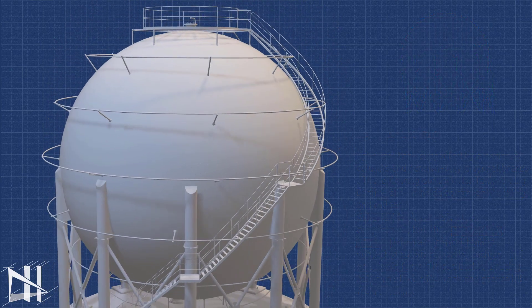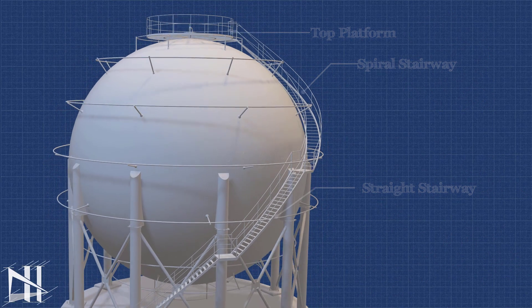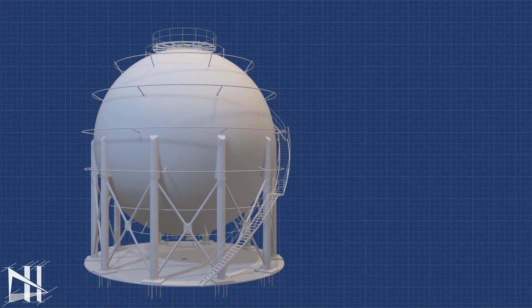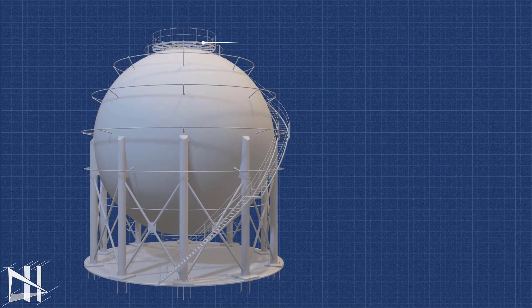Here we have the top platform, the spiral stairway, and the straight stairway. These stairs and platforms are essential for the operation and maintenance of the tank. They allow workers to access the valves, gauges, and other equipment that is necessary to keep the tank running smoothly.